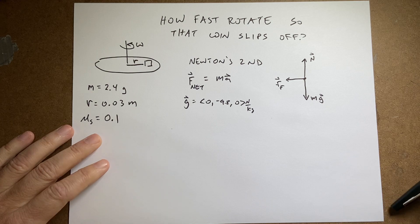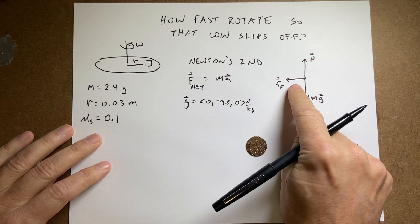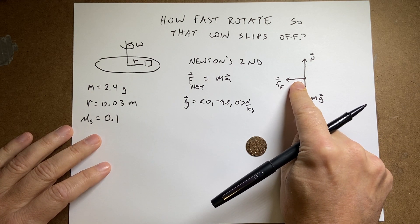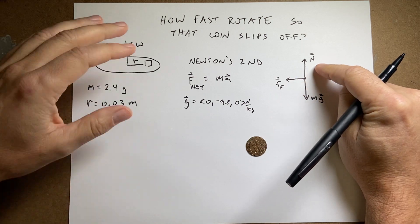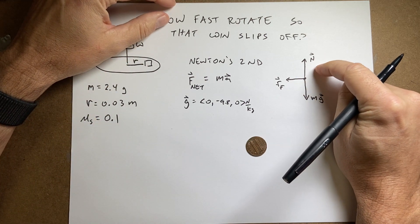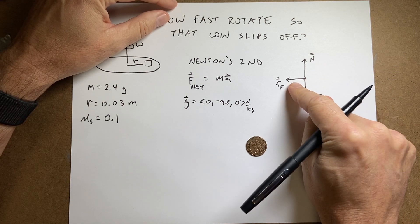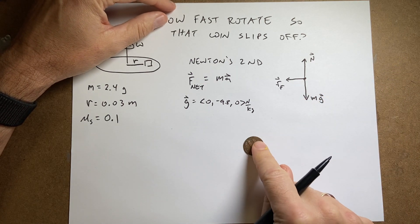So when you have an object on a surface like that, there's really just one force the surface interacting with it. But it's useful to break it into a force that's perpendicular to the surface. We call that the normal force. And a force parallel and that's the friction force.